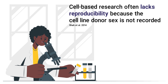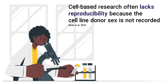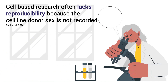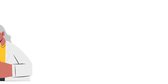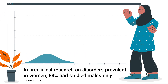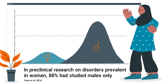Cell based research lacks reproducibility because cell line donor sex is not recorded. In preclinical research on disorders prevalent in women, 88% had studied males only.